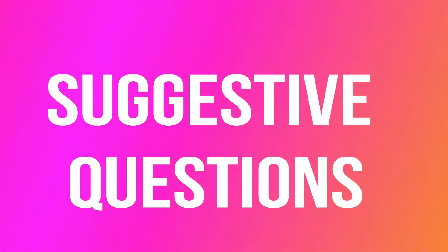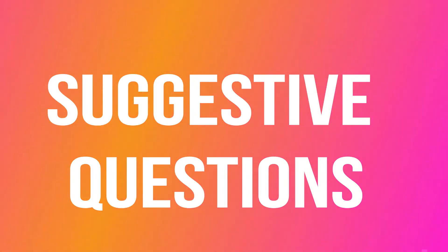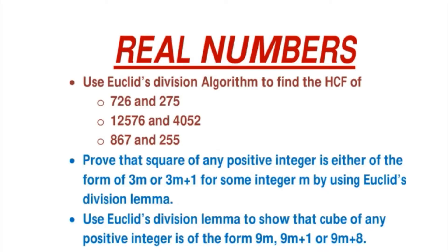Now take a look at the important suggestive questions related to this topic. The first question: use Euclid's division algorithm to find the HCF of these numbers — 726 and 275, 12576 and 4052, and 867 and 255. Try yourself whether you can find the HCF using Euclid's division algorithm. In this video we'll discuss the syllabus and important questions only; if you have any query, please comment below.